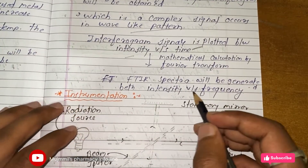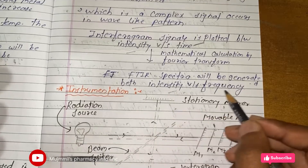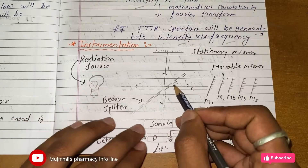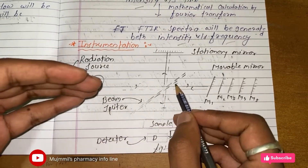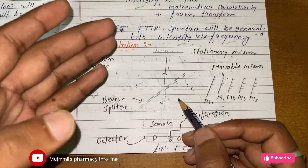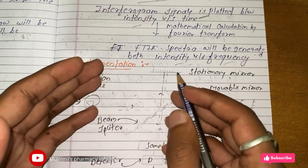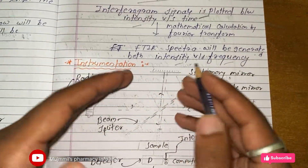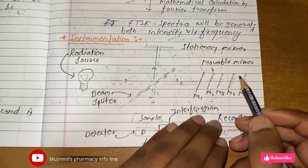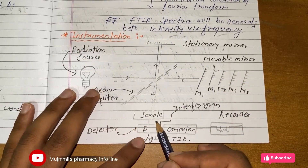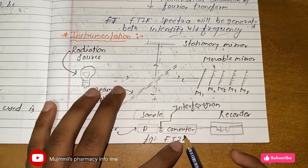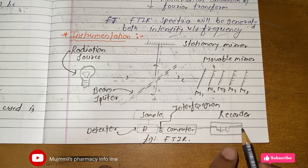Let's see the instrumentation of FTIR. From the radiation source, light goes to a beam splitter. From the beam splitter, light passes to a stationary fixed mirror and to movable mirrors that can be adjusted. There is a sample to be analyzed, then a detector, an interferogram used for calculation, a computer, and finally the response is recorded.